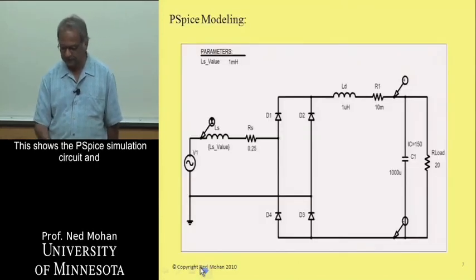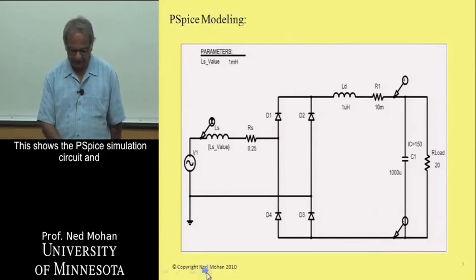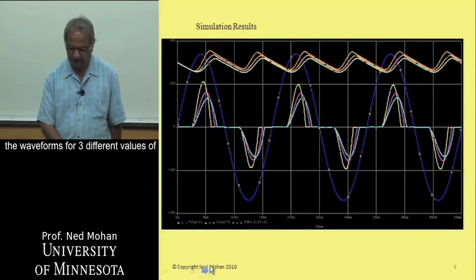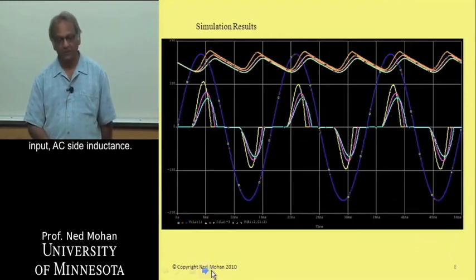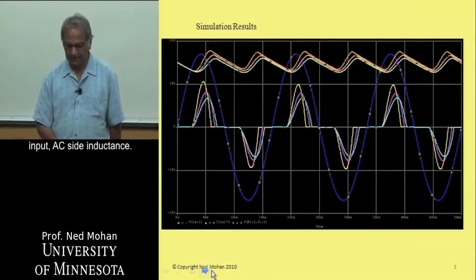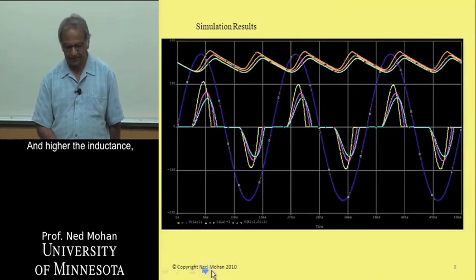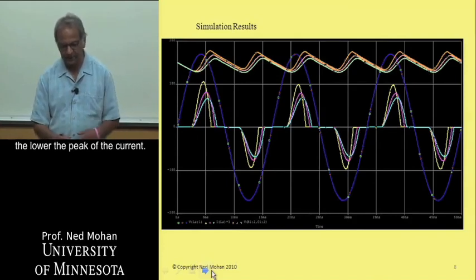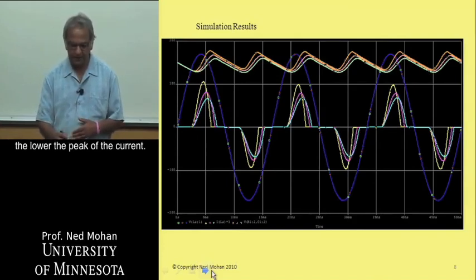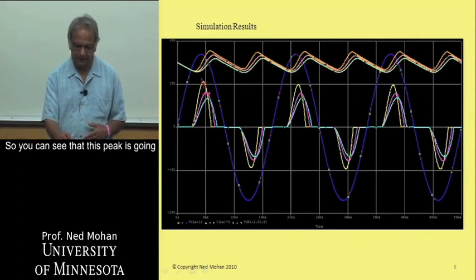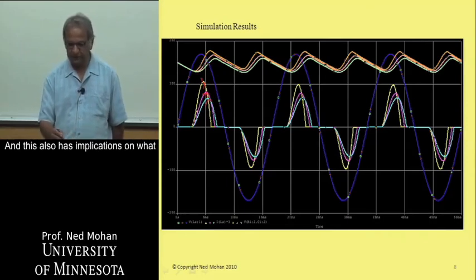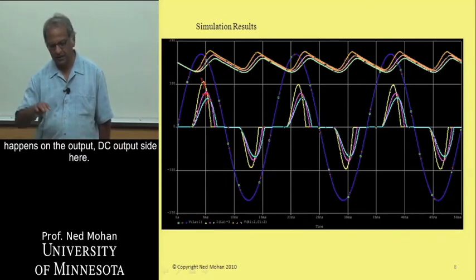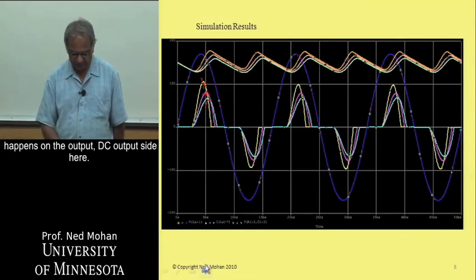This shows the PSPICE simulation circuit and the waveforms for three different values of input AC side inductance. Higher the inductance, lower the peak of the current. So you can see that this peak is going down, and the base is becoming wider. And this also has implications on what happens on the output, DC output side.